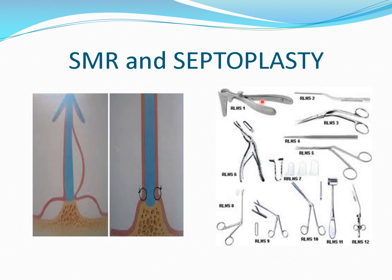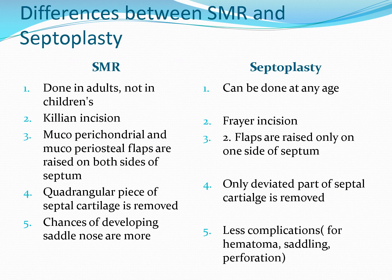Instruments used in this procedure include: Killian speculum, gouge, hammer, Freer elevator, Thudichum nasal speculum, double action bone nibbler, nasal dressing forcep, scissors, crocodile forcep, and suction tip. You can see the nasal quadrangular cartilage being stretched to the nasal spine.